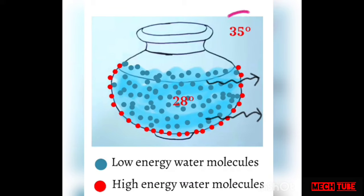Due to the high temperature of the surroundings, the kinetic energy of the water droplets present at the outside surface of the matka will increase and they tend to lose their bonds. As shown in the figure, high energy molecules will always evaporate. But for the evaporation process, surface water molecules need some energy to evaporate.